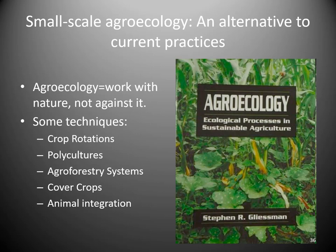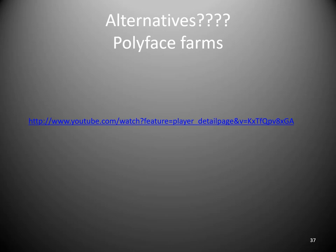It's a closed-loop production system — everything within the system is recycled. You're going to watch an excellent example of alternatives to industrial food production from Polyface Farms. You already met the guy who runs Polyface Farms — his name is Joel Salatin, from Food Inc. He has a pastoral farming system that requires people and working with nature rather than the industrial system. Pause this lecture, watch the clip, then come back and resume.